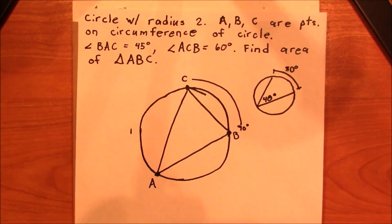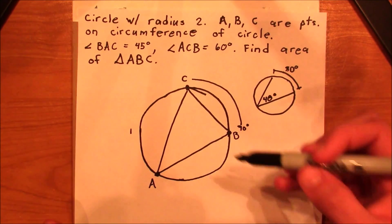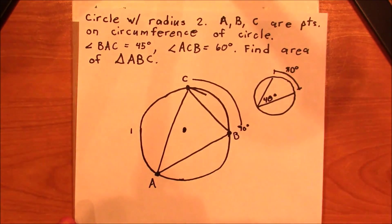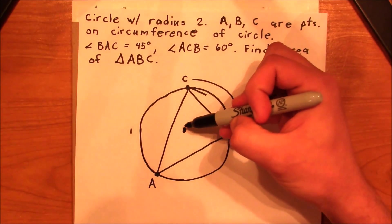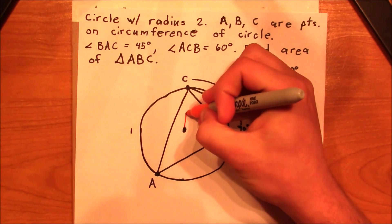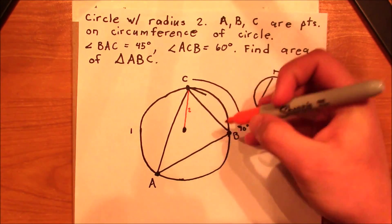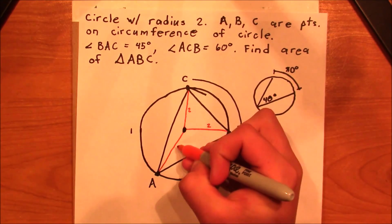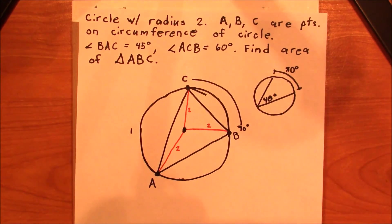Okay, so we also know that the radius of this circle is 2. So the center is right here, and let me just go ahead and draw lines to each point. So let me use a different color. We've got a radius of 2, radius of 2, and a radius of 2.